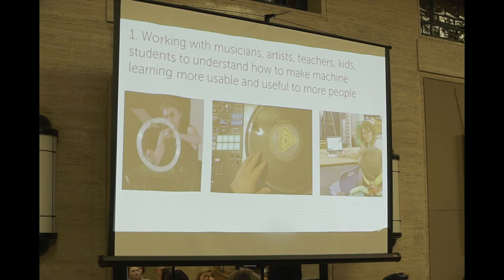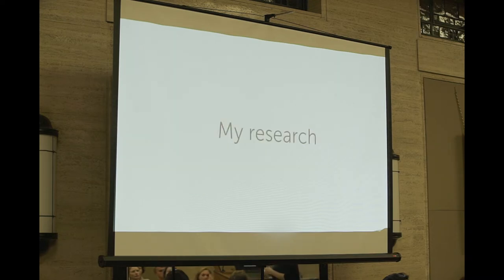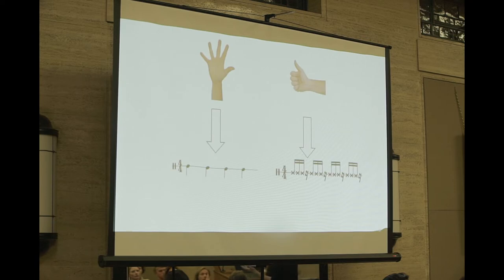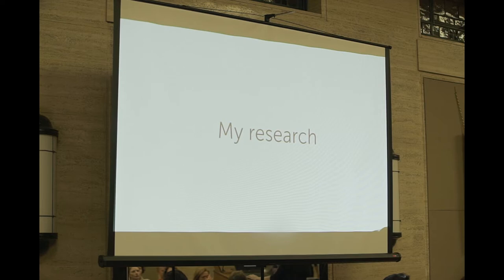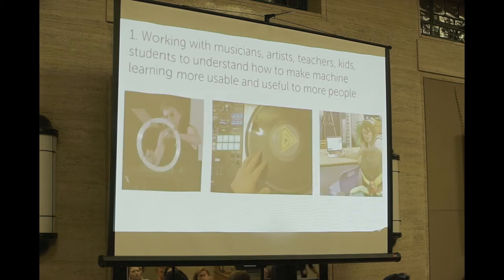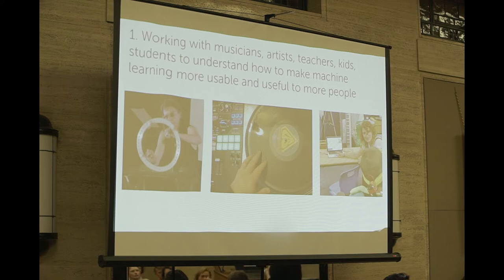Machine learning isn't just usable by people with computer science degrees — this is surprising to many people. It's often even easier to use machine learning to build things by providing examples than it is to teach someone the programming required to write the same program. On this slide you can see on the far left someone from the experimental music community who makes totally new instruments out of weird sensors and performs with them.